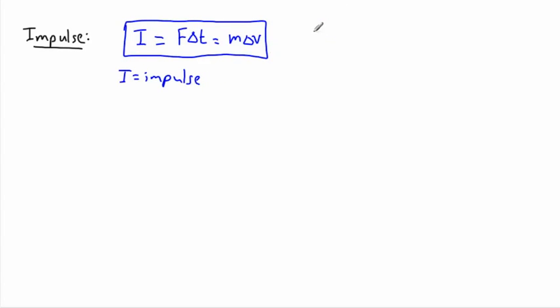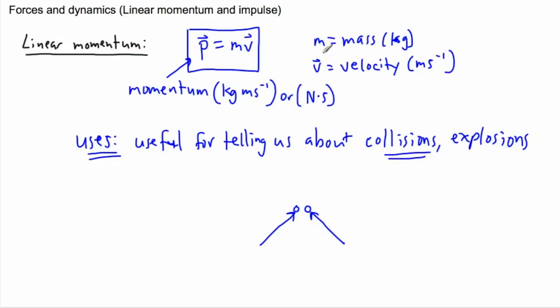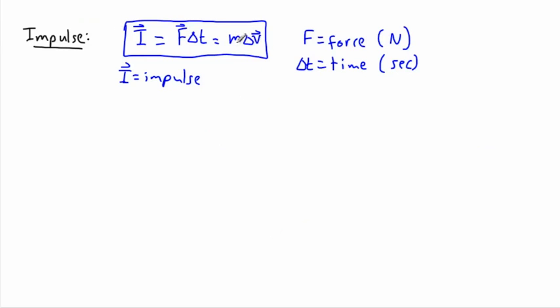So I equals impulse. We'll define the units in a second here. So we have F. Oh by the way impulse is a vector. Force is a vector and velocity is a vector. Should be careful here. So F well that of course equals the force. And that force is measured in Newtons. Now we have delta T. That's just some sort of time or a change in time or a difference in time. And that's going to be seconds. M of course is mass and V is of course velocity. So that's the same thing as we had here. So we have mass and velocity like we had before. Except this time it's mass times change in velocity. So I guess we'll say that.